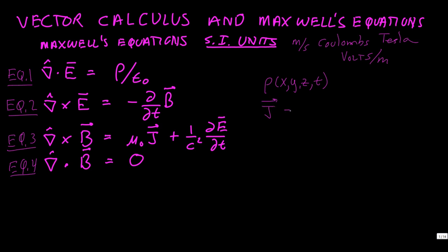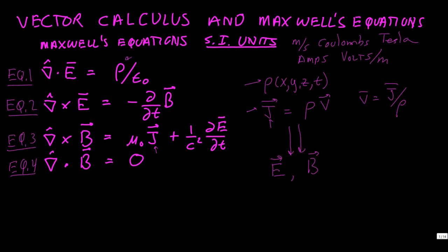The other quantity is the current density, which is a vector measured in amps per square meter. It can be viewed as the charge density times a velocity field; if you want the velocity, v equals j over rho. Maxwell's equations allow you to solve the following problem: given specified current density and charge density, find the electric and magnetic fields consistent with those sources.